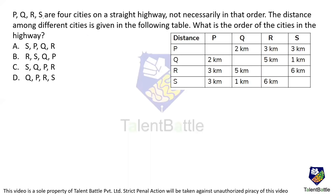P, Q, R, S are four cities on a straight highway, not necessarily in order. The distance among different cities is given in the following table. We need to identify the order of the cities on the highway. The distances are: P to Q is 2 km, P to R is 3 km, P to S is 3 km. Let's first consider option A as the order, meaning first S, then P.